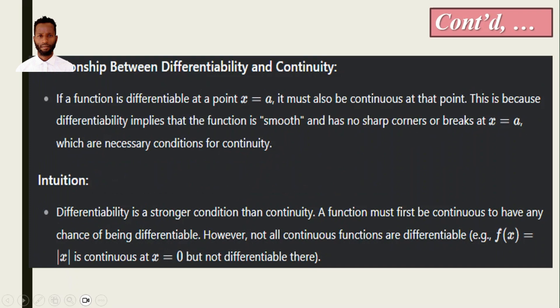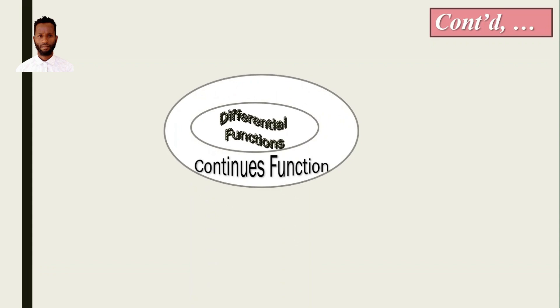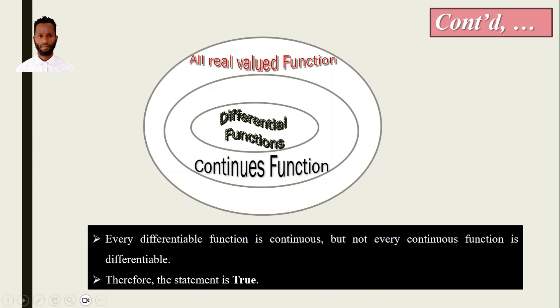Differentiability is a stronger condition than continuity. A function must first be continuous to have any chance of being differentiable. However, not all continuous functions are differentiable. For example, f(x) = |x| is continuous at x = 0 but not differentiable there. From this we can decide that every differentiable function is continuous but not every continuous function is differentiable.